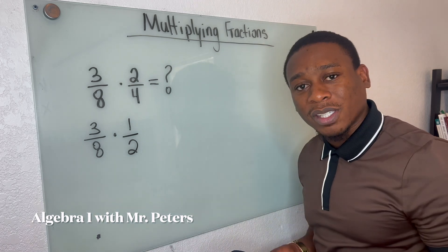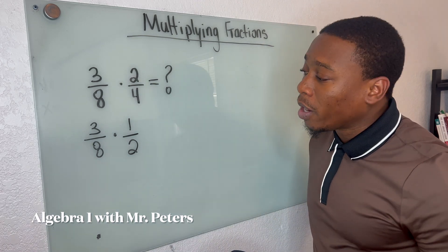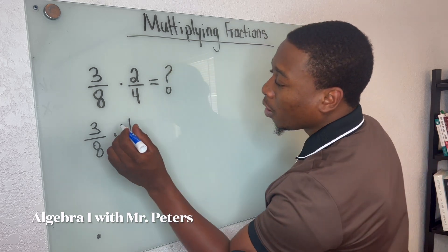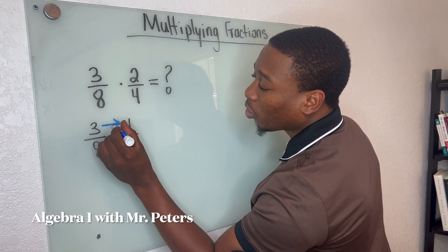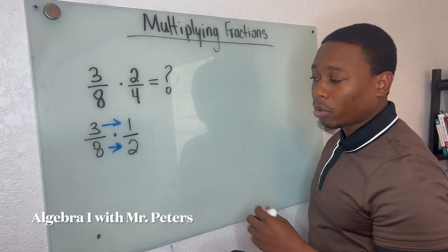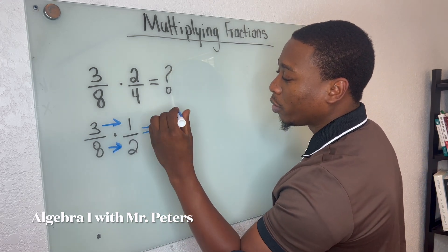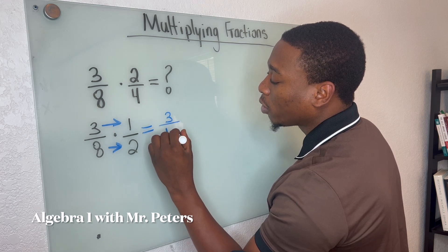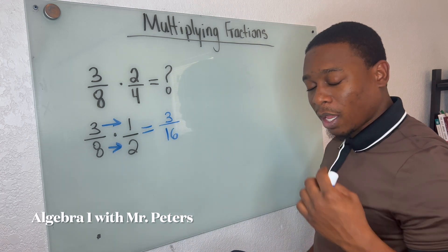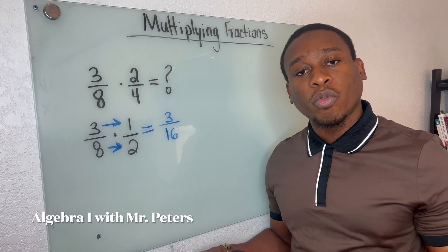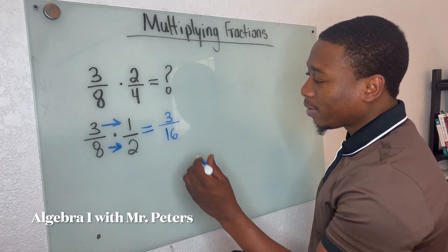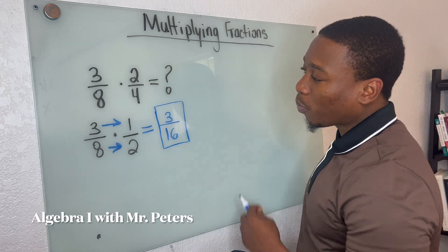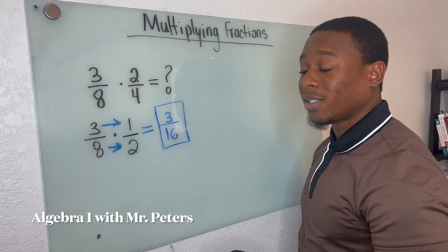After we checked to see if we could simplify, now we're going to just multiply the fractions, meaning I'm multiplying straight across — top number with top number, bottom number with bottom number. And as a result, we're going to get 3 over 16. And typically, after we're multiplying, the last step is to check to see if we could simplify again. And in this problem, we cannot simplify.